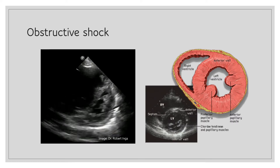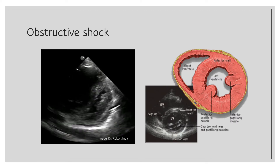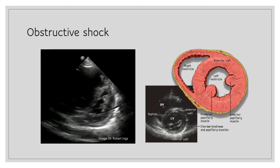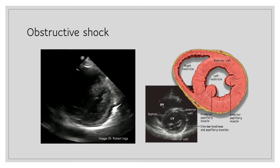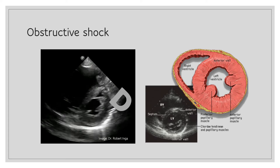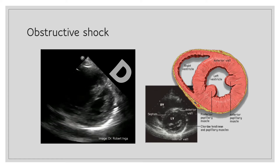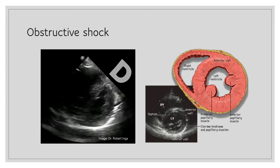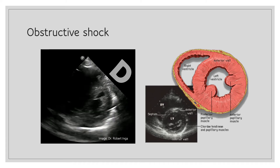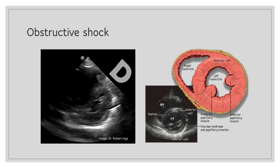Now coming to obstructive shock — this is a patient with pulmonary embolism. In this parasternal short axis view, note that the right ventricle is significantly enlarged, pushing on the left ventricle. Because of this pressure, the interventricular septum flattens and the left ventricle appears like the letter D instead of its original circular shape. This is called the D sign.